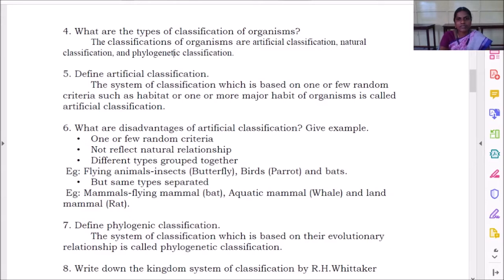Define artificial classification. What is artificial classification? The system of classification which is based on one or few random criteria such as habitat or one or more major characteristics of organisms. That is called artificial classification.